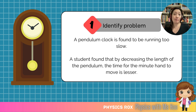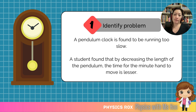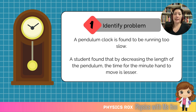First of all, let's go through an example of the problem we could encounter. Typically, when it comes to physics, this should be a real-world problem that you could actually encounter, and we would try to conduct an experiment in the lab. So let's say we find a problem with a pendulum clock. This pendulum clock is found to be running too slow. A student found that by decreasing the length of the pendulum, the time for the minute hand to move is lesser. There's a problem, and the student did find some kind of solution, but what we want to do is find out what is the relationship between these two variables.